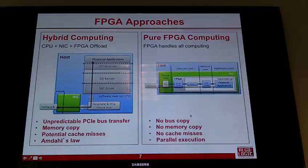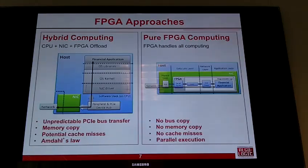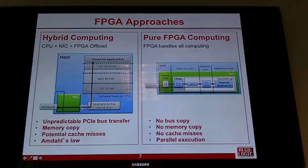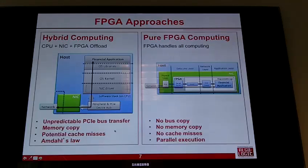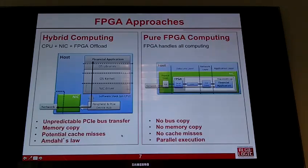There are a few ways to do FPGA computing. The hybrid computing model combines a CPU, a NIC, and an FPGA offload engine. Packets come in through the FPGA, passed up through a NIC, through the driver, through the OS — or sometimes bypassing the OS — and up to the financial application. The issues with hybrid computing include unpredictable PCI Express bus transfer times, memory copies, cache misses, and Amdahl's Law, where sequential execution can dominate total execution time.